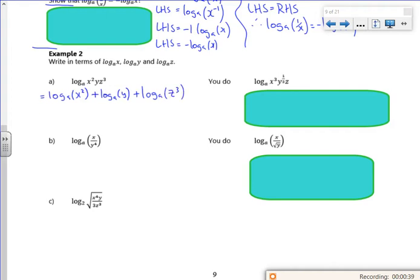I'm going to put the powers at the front because I want it in terms of log x, log y and log z. And at the moment I've got it as an x squared and a z cubed. So if I put the power at the front, I've got 2 log a of x, I've got log a of y and I've got 3 log a of z.